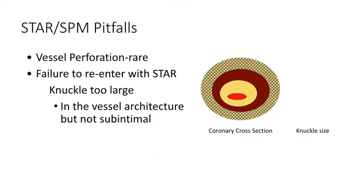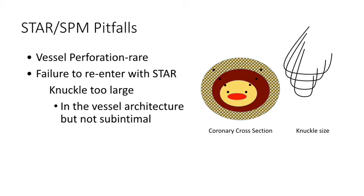Some problems one can encounter with this approach: vessel perforation is very rare, as these knuckles tend to stay within the vessel architecture. The more common issue is failure to enter with STAR, usually because the knuckle is very large and sits toward the adventitia rather than the sub-intimal space. You want to keep that knuckle relatively small.